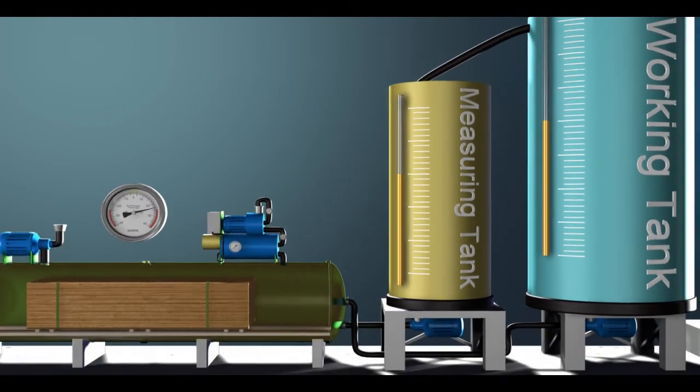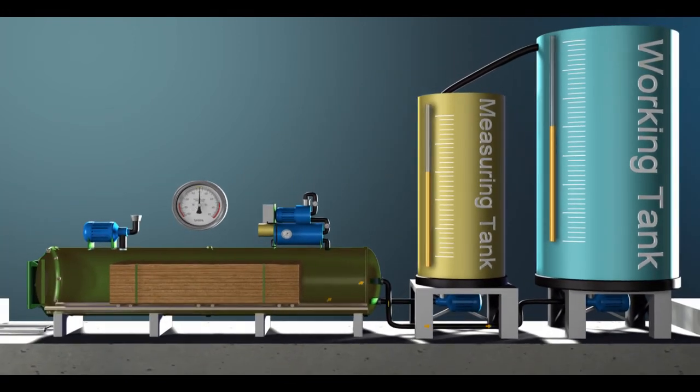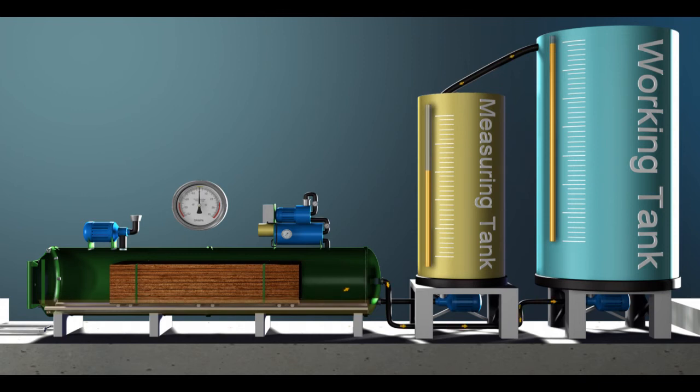The pressure is then released and the cylinder is emptied by pumping the preservative back into the working tank, where it will create an overflow into the measuring tank.